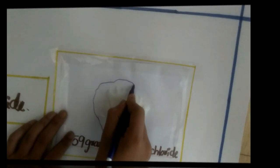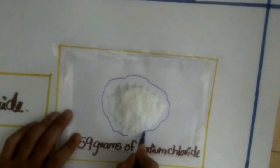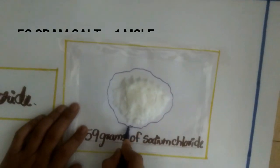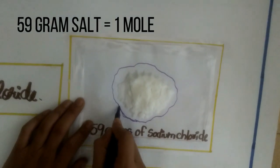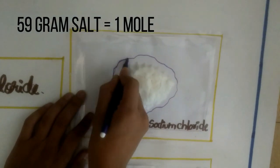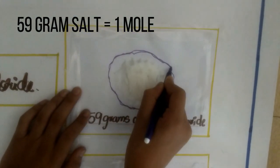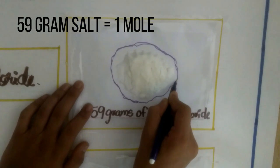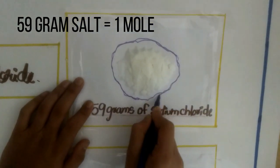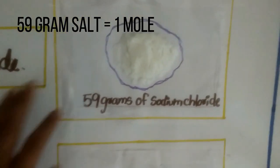Salt is sodium chloride. 59 grams of salt contains 1 mole or 6.023 into 10 to the power 23 sodium chloride molecules.